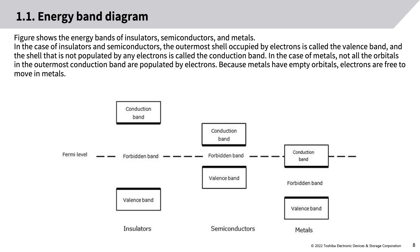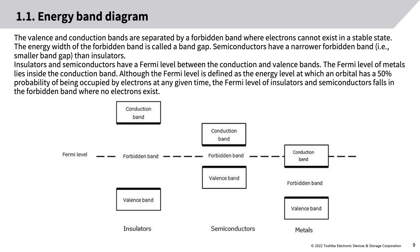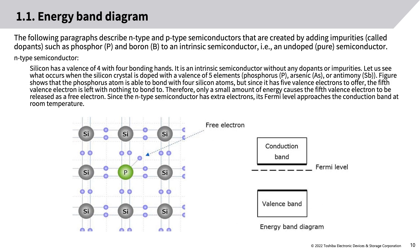The figure shows the energy bands of insulators, semiconductors, and metals. In insulators and semiconductors, the outermost shell occupied by electrons is the valence band, and the empty shell is the conduction band. In metals, not all orbitals in the outermost conduction band are populated, so electrons are free to move. The valence and conduction bands are separated by a forbidden band; the energy width of this forbidden band is the band gap. Semiconductors have a narrower band gap than insulators. Insulators and semiconductors have a Fermi level between the conduction and valence bands, while the Fermi level of metals lies inside the conduction band. The Fermi level is defined as the energy level at which an orbital has a 50% probability of being occupied by electrons.